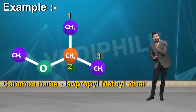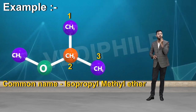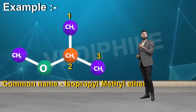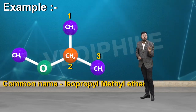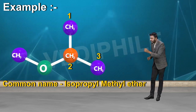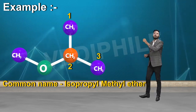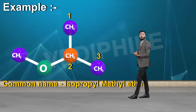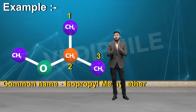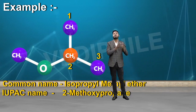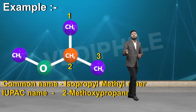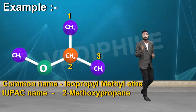There are two possibilities for the methoxy position. The second position has OCH3, so the IUPAC name is 2-methoxypropane. It is called propane because there is a chain of 3 carbons.